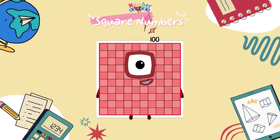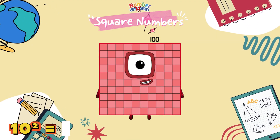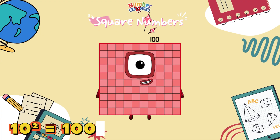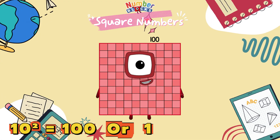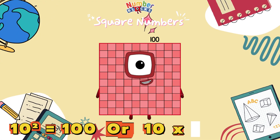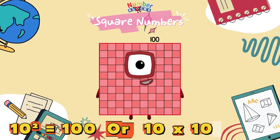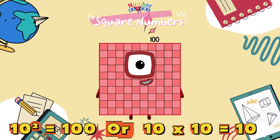10 squared is equals to 100, or 10 times 10 is equals to 100.